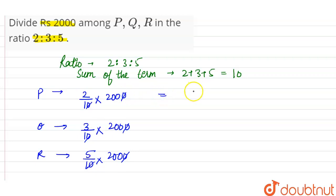So P's share will be equal to 200 into 2, which is 400, so rupees 400. 200 into 3 means rupees 600, so Q's share is rupees 600. And R's share is rupees 5 into 200, which is 1000.